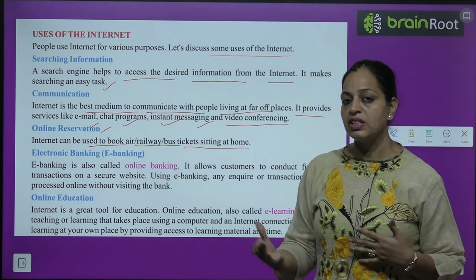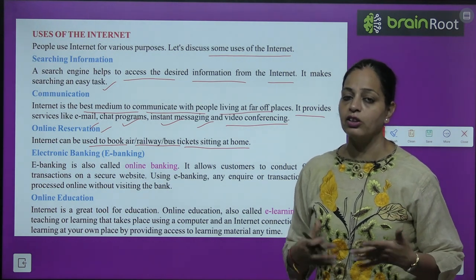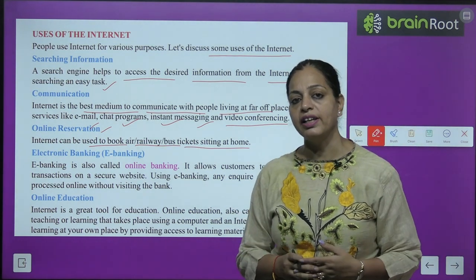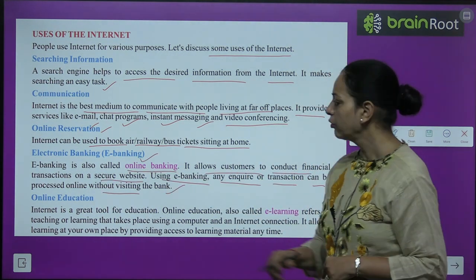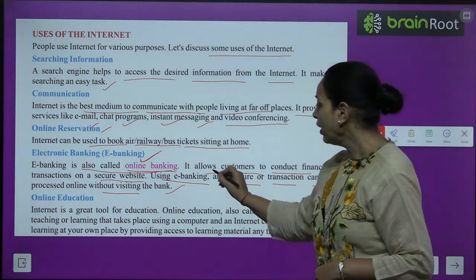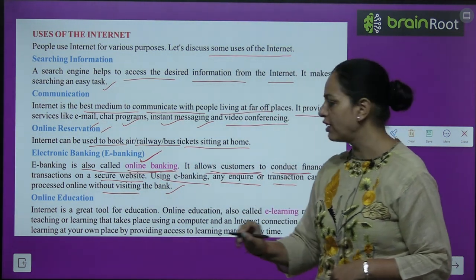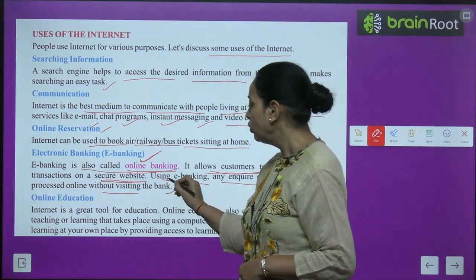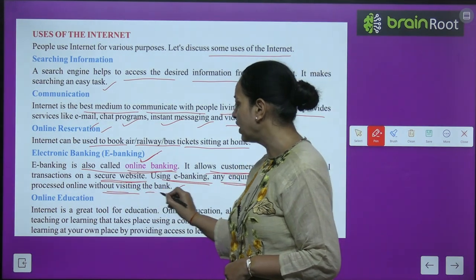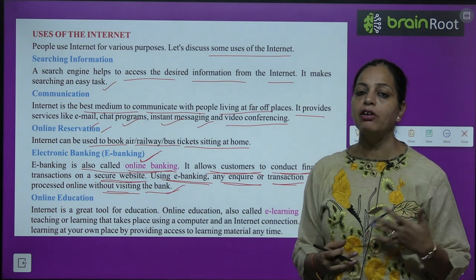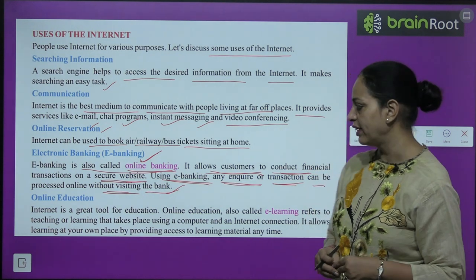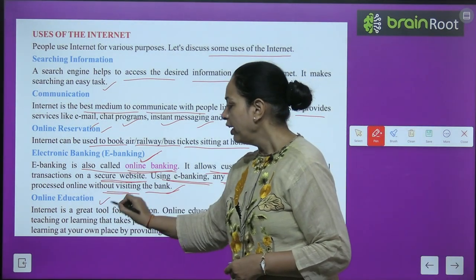Online reservation: the internet can be used to book air, railway, and bus tickets sitting at home. Nowadays, whether you travel by bus, car, train, or air, you can book tickets from home with the help of the internet. Electronic banking (e-banking), also called online banking, allows customers to conduct financial transactions on a secure website. Using e-banking, any inquiry or transaction can be processed online without visiting the bank.